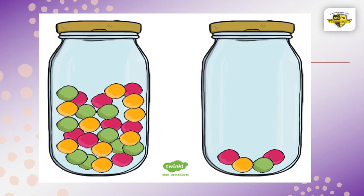Yummy, yummy to my tummy. Do you like to eat sweets? If you like to eat a lot of sweets, which jar will you buy? Think. You will buy the jar on the left side because it has more sweets. But I don't like to eat a lot of sweets because it's unhealthy. Then I will buy the jar on the right side because it has less sweets.